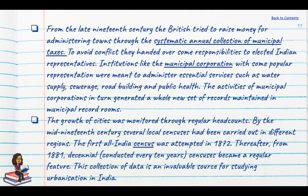Growth of cities was also monitored through census-taking. The first All India Census was attempted in 1872, and from 1881 onwards, every ten years they began to conduct censuses. This becomes an invaluable source for studying urbanisation in India.